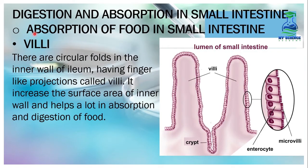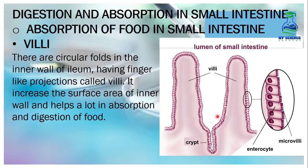Let's see how absorption takes place in the small intestine. There are circular folds in the inner wall of the ileum having finger-like projections called villi. This increases the surface area of the inner wall and helps a great deal in the absorption and digestion of food. These finger-like projections called villi increase the surface area of the small intestine's inner wall and help in absorption.